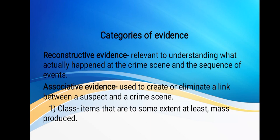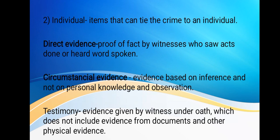Within associative evidence we have two kinds: class evidence and individual evidence. Class evidence cannot tie a crime to any one individual — for example, finding a gun at a crime scene won't be unique unless you go into the specific details that lead to that exact gun. Individual evidence, by contrast, can tie a crime to a specific person — for example, fingerprints or DNA.